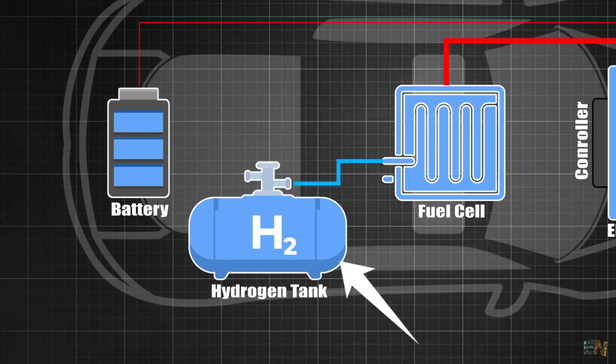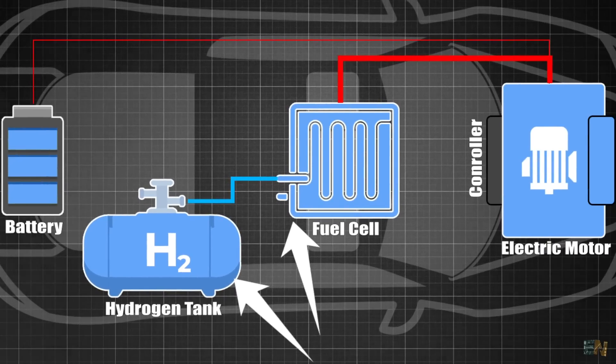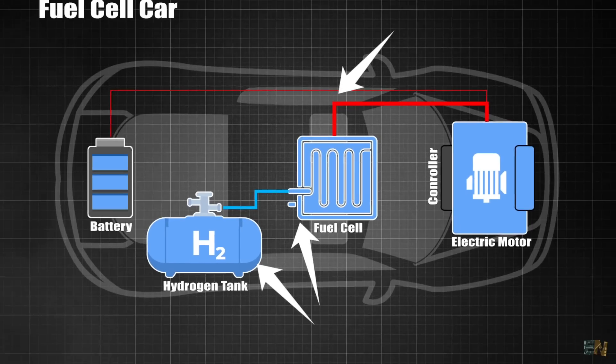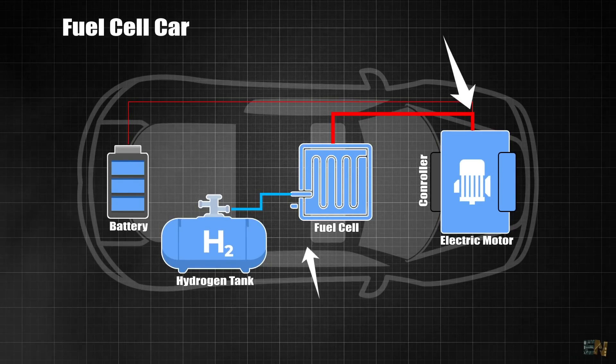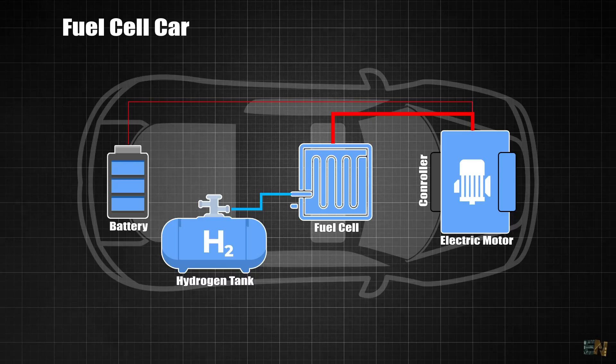We store the hydrogen in a high pressure tank. We feed it to the fuel cell, it creates energy, and also as a waste it creates water. The energy is then passed to the ESC and electric motor, and that's how it works, more or less.